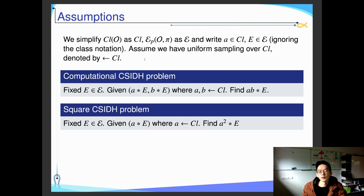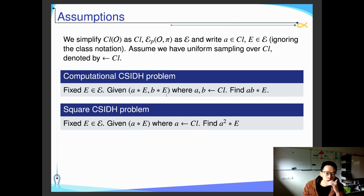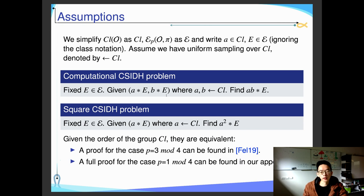For our cryptosystem, we have some computational assumptions. The first and most well-known is the computational CSIDH problem: given three curves E, [A]E, and [B]E, your task is to find [AB]E. This is quite similar to the Diffie-Hellman problem. We also have a relaxed version called the square CSIDH problem: given one curve [A]E, your task is to find [A^2]E. If you are given the order of the ideal class group, these two problems are equivalent. A proof for the case p ≡ 3 mod 4 can be found in a referenced thesis, and the other part uses the fact that the 2-Sylow subgroup of the ideal class group has rank 1.